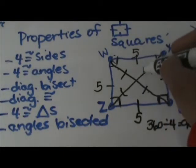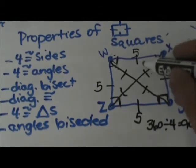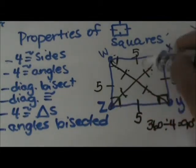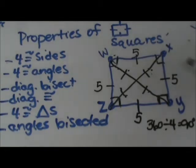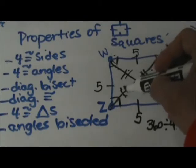These are bisected, and these are bisected, and because it is also a rectangle and a rhombus, all four diagonal half diagonals are congruent to each other too, which actually makes for four isosceles triangles.